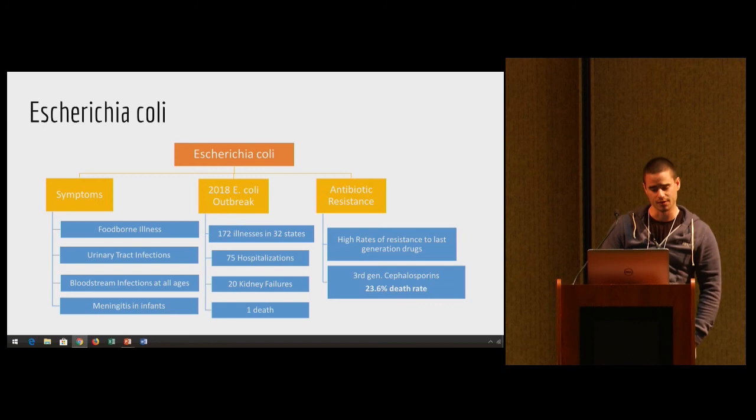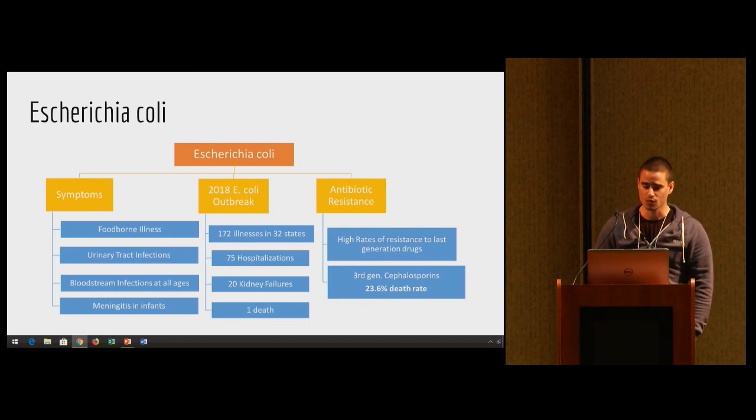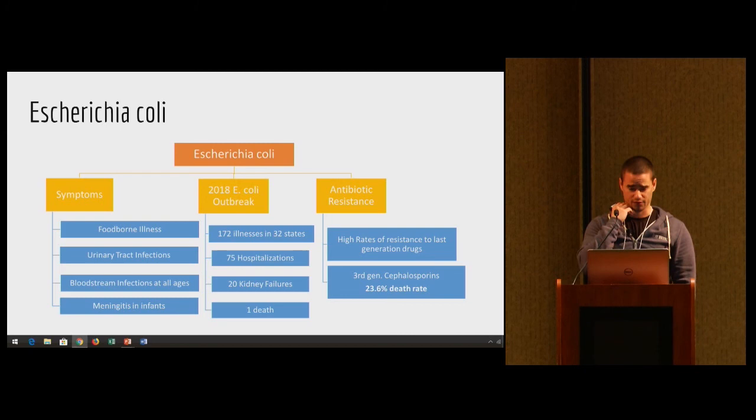The disease we're focusing our attention to right now is E. coli, but this approach can be generalized to other diseases. The types of symptoms you get from E. coli are foodborne illnesses, urinary tract infections, bloodstream infections, and meningitis. Recently there was an E. coli outbreak with romaine lettuce.